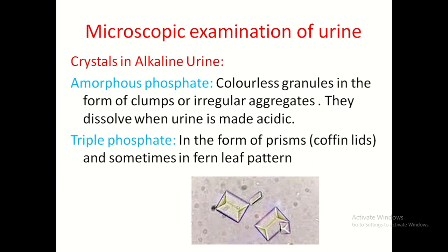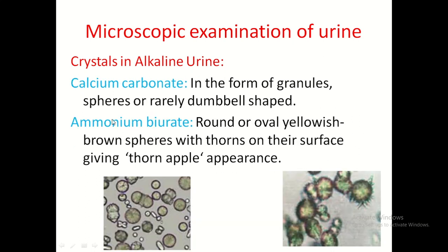Crystals in alkaline urine: amorphous phosphate crystals are colourless granules in the form of clumps or irregular aggregates, which dissolve when urine is made acidic. Triple phosphate crystals appear as prisms or coffin-lid shapes, sometimes with a fern-leaf pattern. Calcium carbonate crystals appear as granules, spheres, or rarely dumbbell shapes. Ammonium biurate crystals are round or oval, yellowish-brown spheres with thorns on their surface — giving a thorn apple appearance.